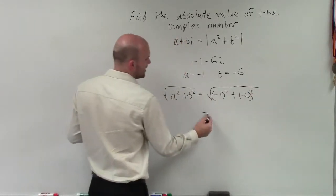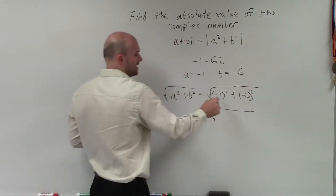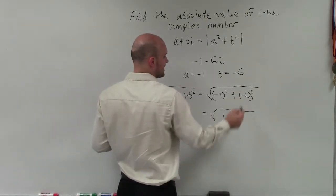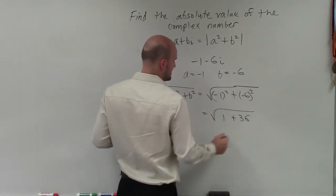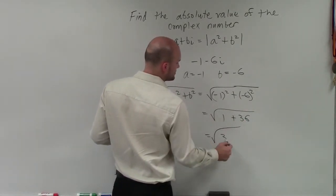All right, so what we have here is negative 1 squared is going to be positive 1. Negative 6 squared is going to be positive 36, which equals the square root of 37.